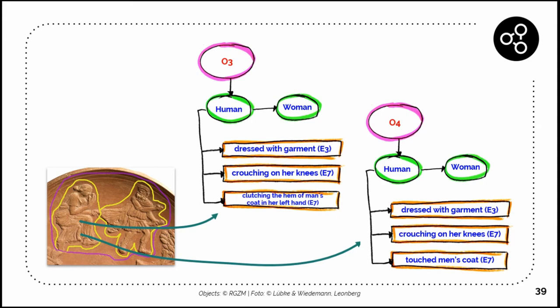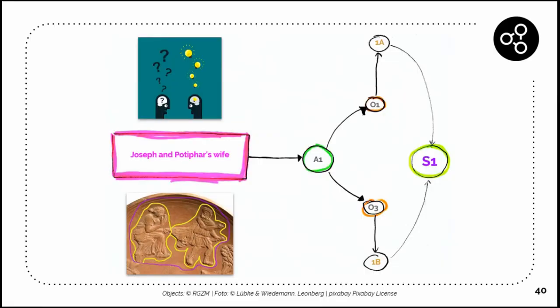If we go to the interpretations in the end and connect the interpretation to different observations, we can say the first interpretation could be that the scene is Joseph and Potiphar's wife, or the woman with an issue of blood—Christ is healing a woman with an issue of blood. So maybe two different interpretations of the same scene, but we try to model why we think it is like this.